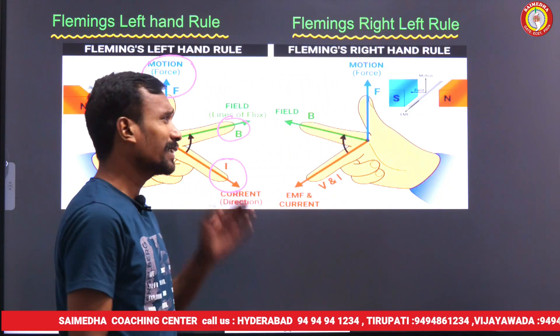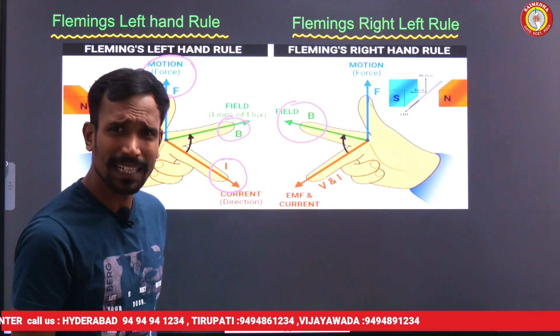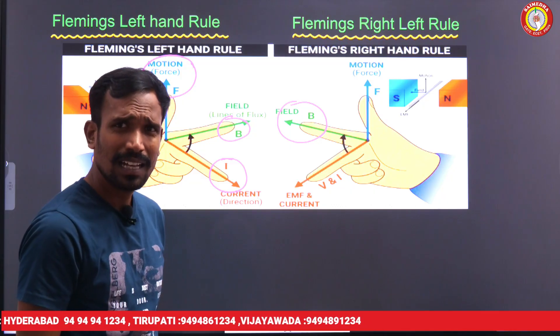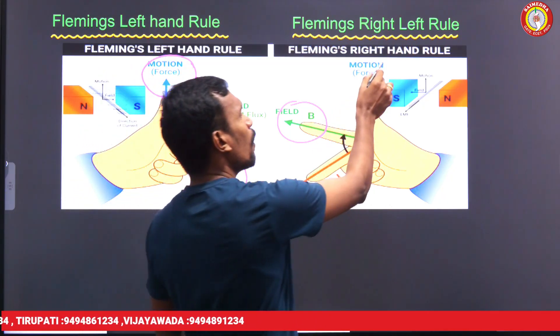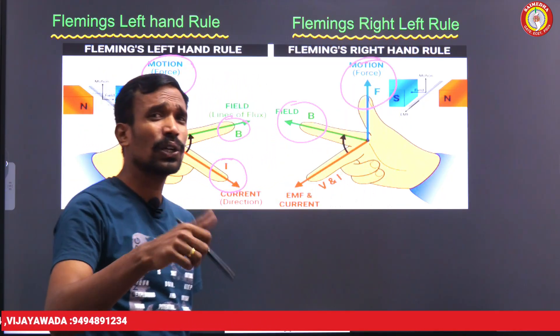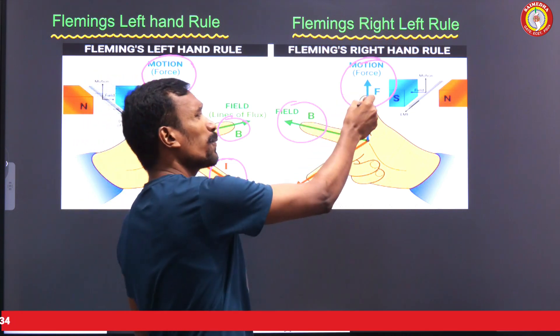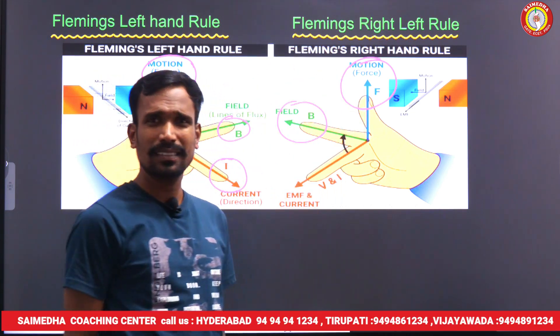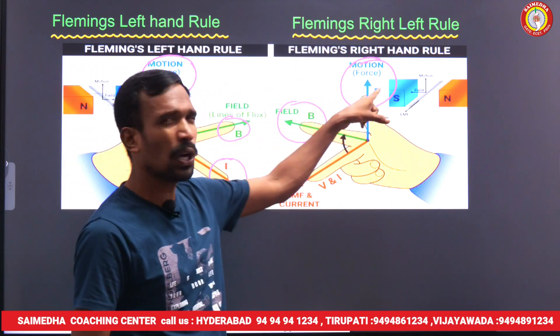In a generator, with a rotating conductor in a magnetic field, you can determine the EMF direction. The field direction is indicated by the forefinger, and the conductor's motion or rotating direction is indicated by the thumb.